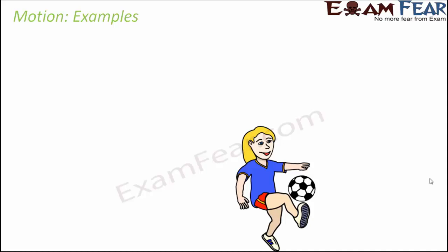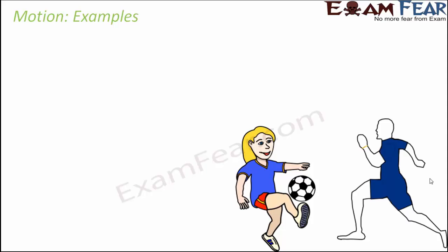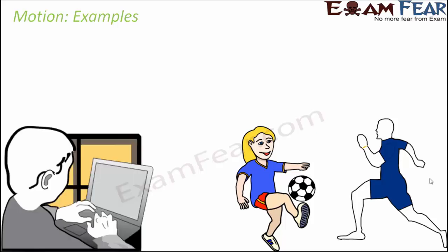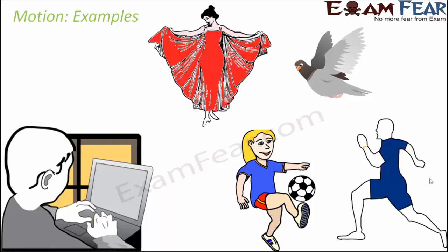When a girl is playing football, her arms and legs are continuously changing position with time, so the girl is in motion. A person who is running is in motion because his position changes with every instant of time. When you work on a laptop, your fingers are constantly changing their position, so your fingers are in motion. A bird flying from one place to another is also in motion.